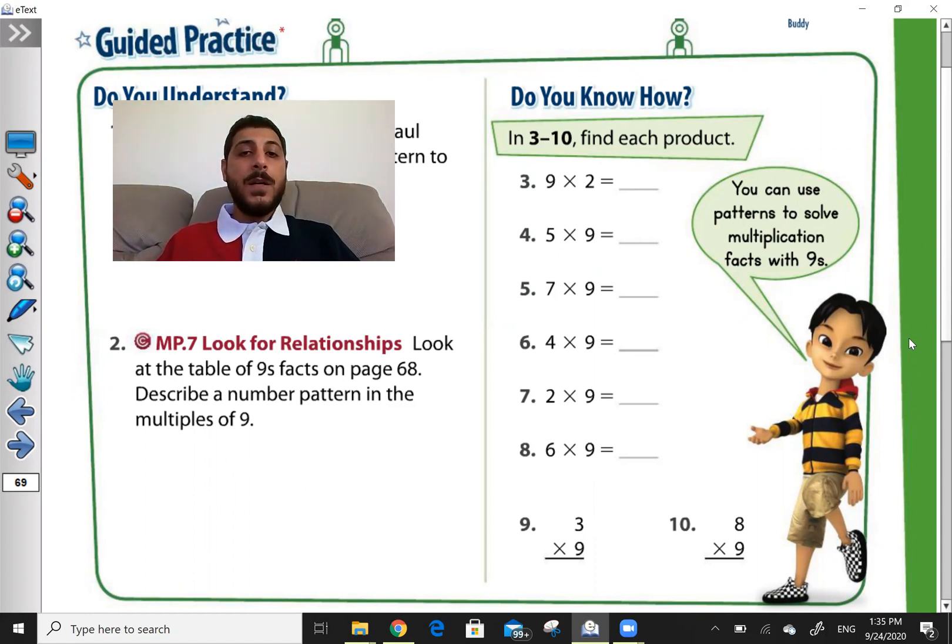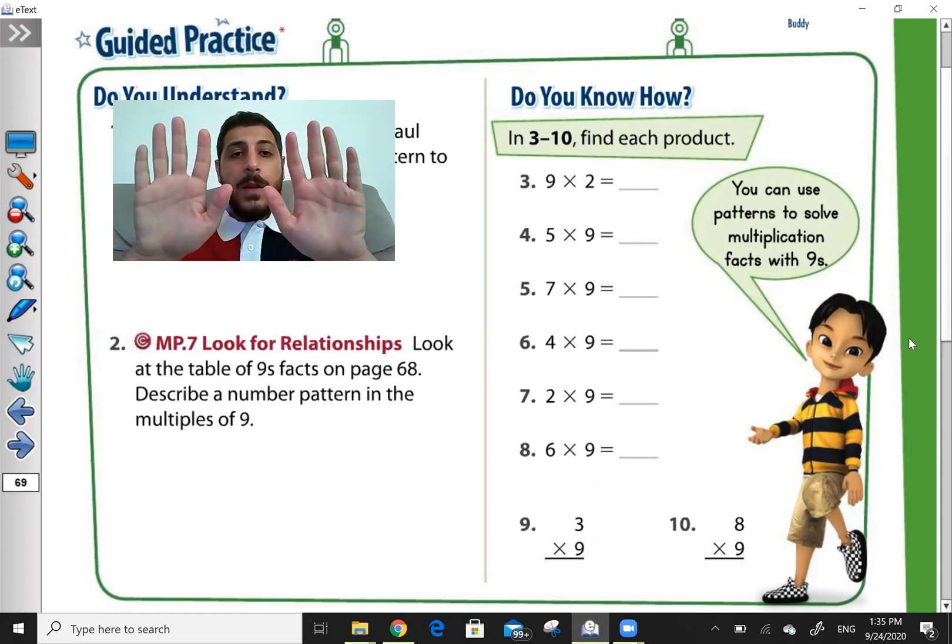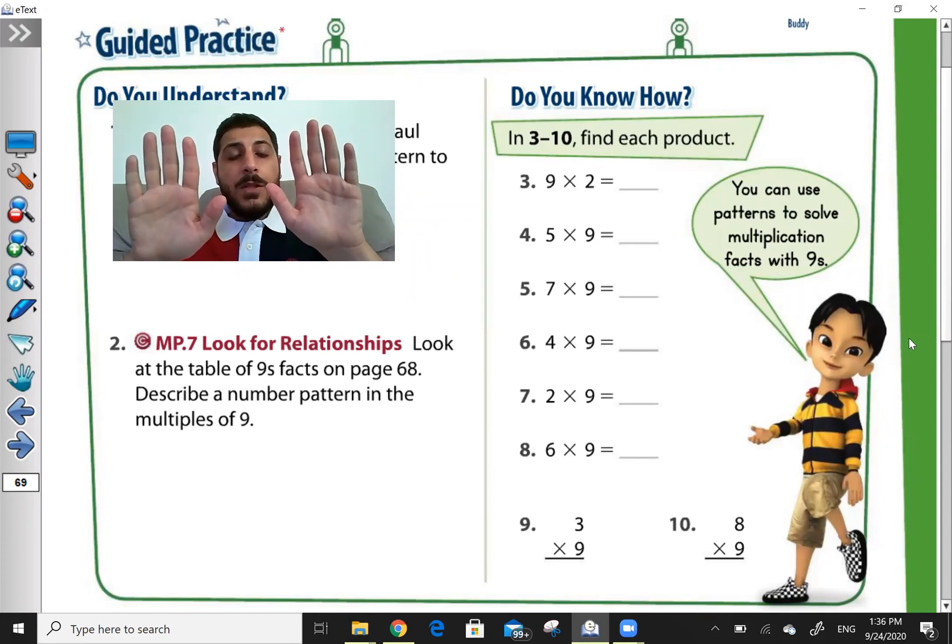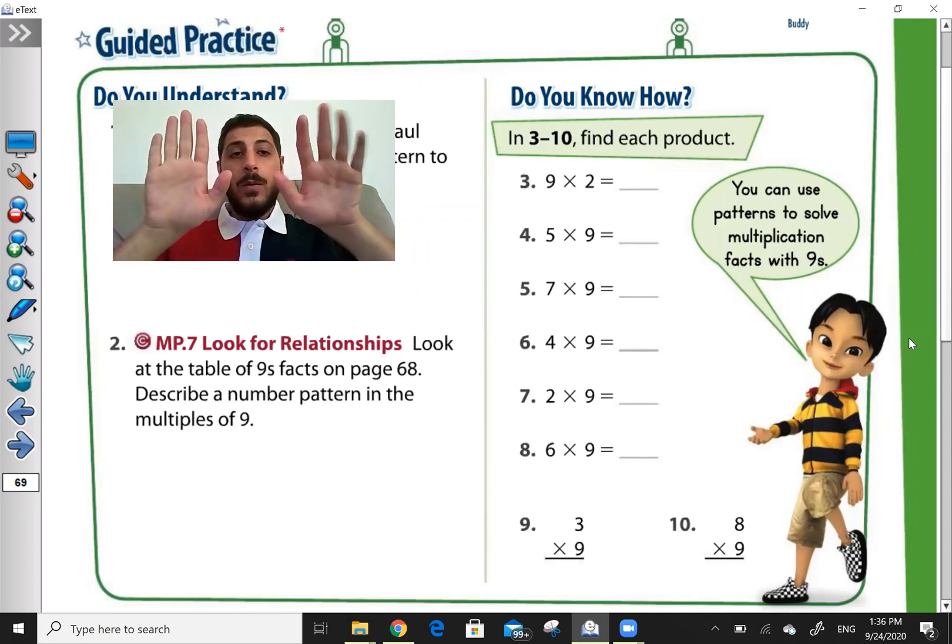For example, question number 3, 9 times 2. Always do like this to find the answer of the multiplication table of 9 only. I start from my left hand. Where is your left hand? This is my left hand.